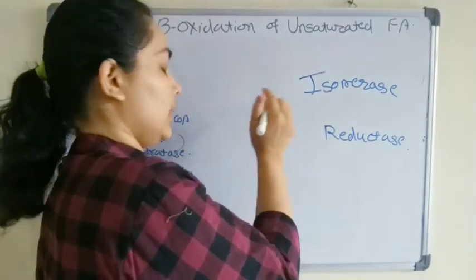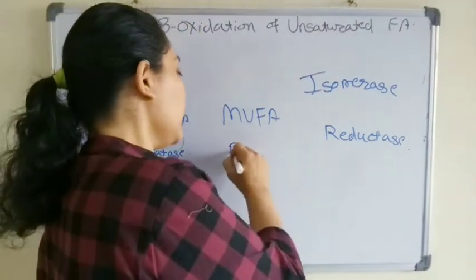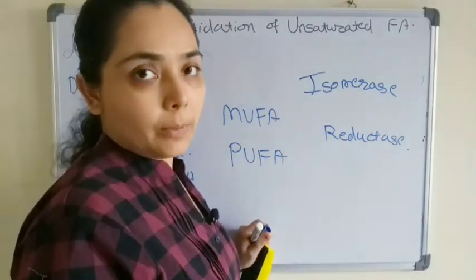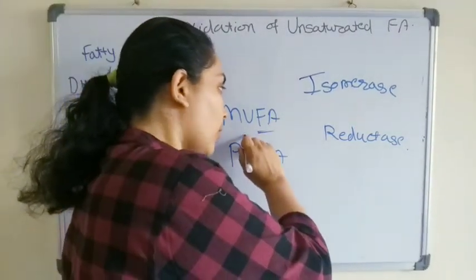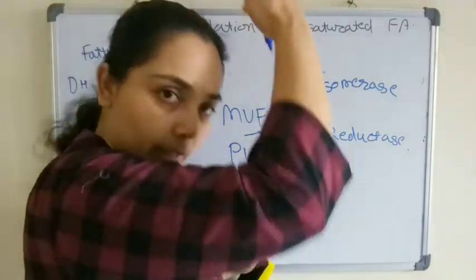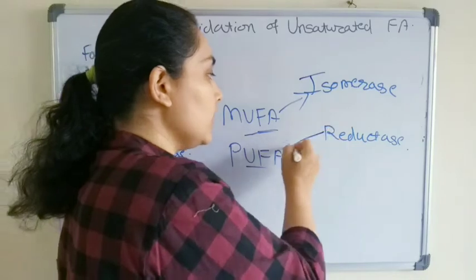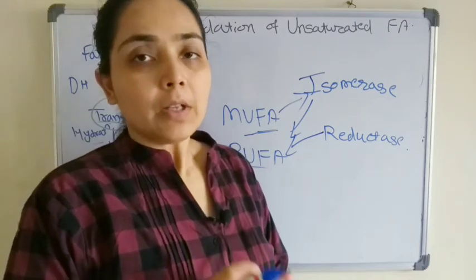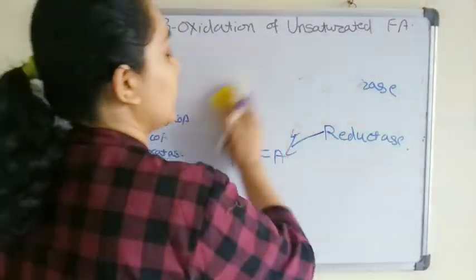Monounsaturated fatty acid has one double bond, and polyunsaturated fatty acid has two or more double bonds. In the oxidation of monounsaturated fatty acid, only the isomerase enzyme is involved. For polyunsaturated fatty acid, both isomerase and reductase enzymes are involved. Let us discuss the oxidation of mono and poly one by one, starting with monounsaturated fatty acid.